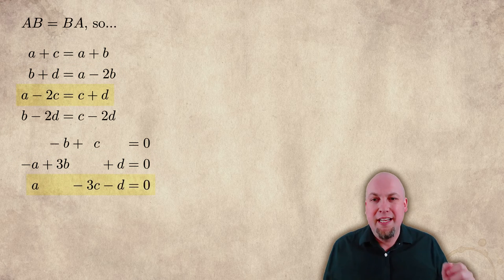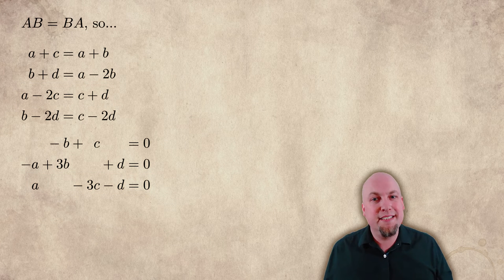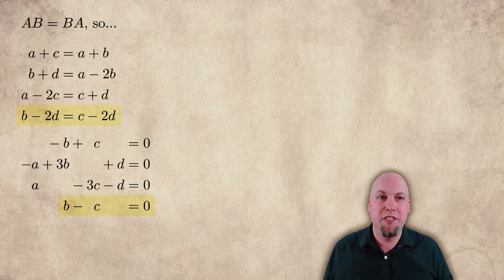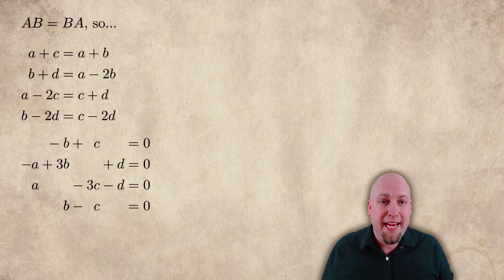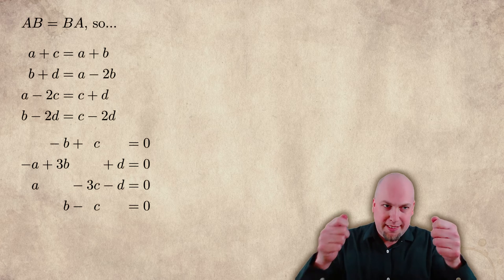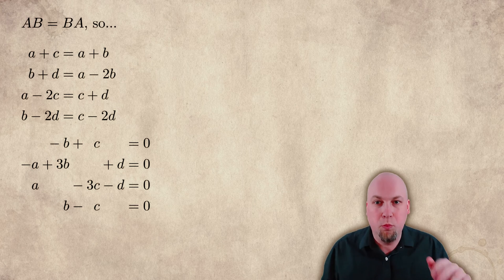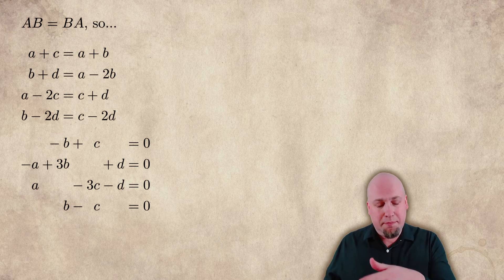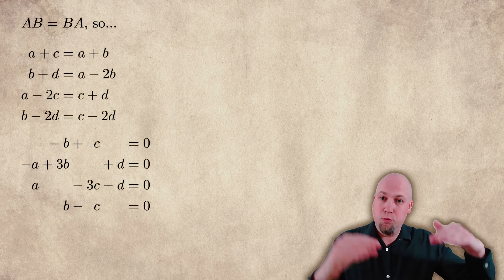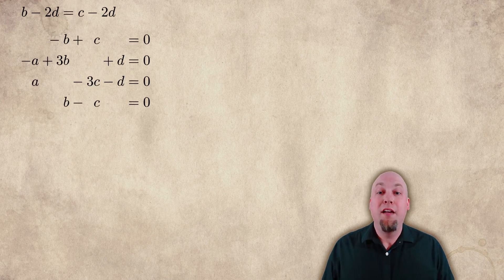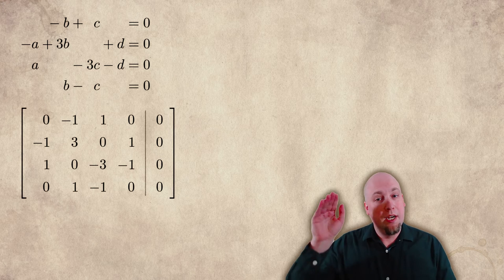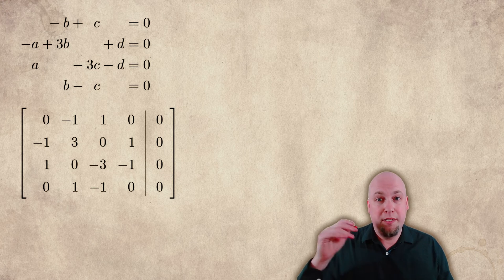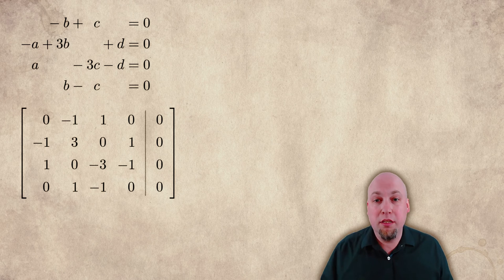Before we get into that, I'll note that this linear system is simple enough that you might be able to solve it directly. For example, the top equation — a plus c equals a plus b — you might just cancel the a's on both sides and get c equals b, then substitute into the other equations. But I'm going to do it our standardized way: set it up as a linear system, throw it into a matrix, do row operations, and interpret at the end. Every row of the matrix corresponds to an equation, and every column gives the coefficients of one variable.